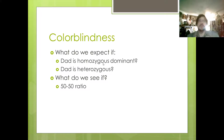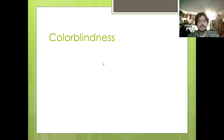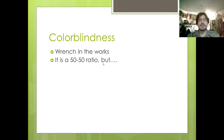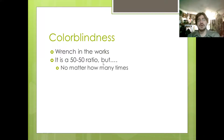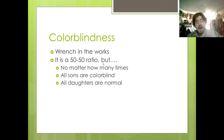The wrench in the works is that when you have a normal-sighted father and a colorblind mother, you do see the 50-50 ratio. But that 50-50 ratio is all sons colorblind, all daughters normal-sighted.